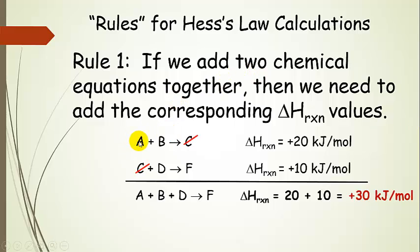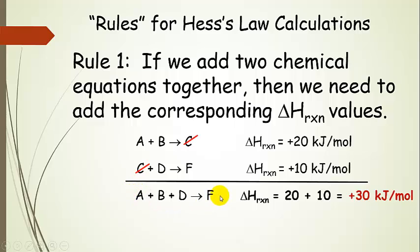So we're going to add two chemical equations together. Here we have A plus B going to C, and then C plus D going to F. We add these two together to get the overall reaction. Notice: anything that is on both the product side and the reactant side can be canceled out. They have the same coefficient, so they're completely canceled out. If one said 2C and the other only 1C, there would still be 1C left over. So A plus B going to C, plus C plus D going to F — cancel out the C's — and we add the delta H reactions together to get the new delta H reaction, which is plus 30 kilojoules per mole.